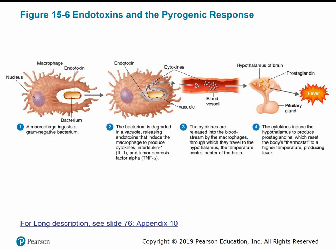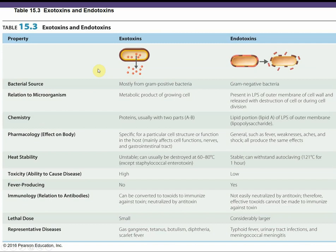The fever response can help the body recover more quickly, increase metabolism, and inhibit bacterial replication. To summarize exo versus endotoxins: exotoxins are mostly from gram-positive bacteria and are protein-based, like the AB toxins. Endotoxins are only from gram-negative bacteria because they're part of the lipopolysaccharide, and are lipid-based — the lipid A. Endotoxins are more heat-stable and can withstand autoclaving, whereas exotoxins are more easily destroyed. Examples of exotoxin diseases include gas gangrene, tetanus, botulism, diphtheria, and scarlet fever. Endotoxin diseases include typhoid fever, urinary tract infections, and meningitis.